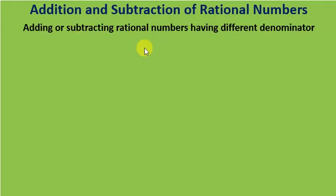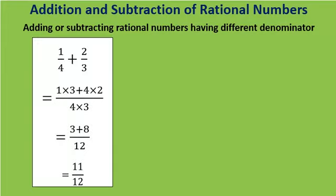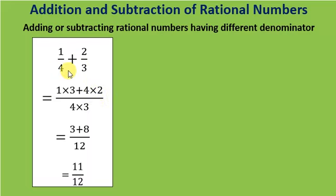Now we will understand the addition and subtraction of rational numbers which do not have a common denominator. For example, 1 by 4 plus 2 by 3 — here the denominators are different. We use the cross multiplication method: multiply the numerator of the first rational number by the denominator of the second, that is 1 into 3, plus the denominator of the first by the numerator of the second, that is 4 into 2, all divided by 4 into 3. So 3 plus 8 equals 11, giving 11 by 12.